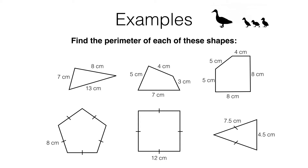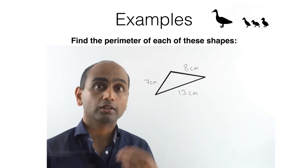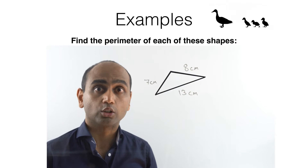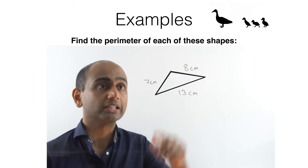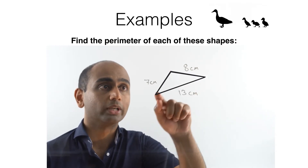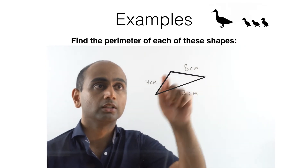In this video we're going to be looking at how to find the perimeter of a shape. Let's start with this first one. The perimeter of a shape is simply the distance all the way around it.